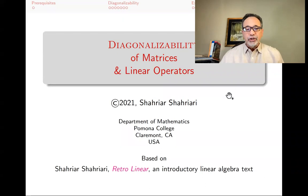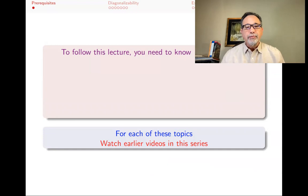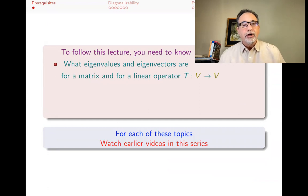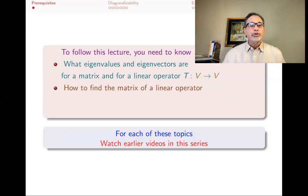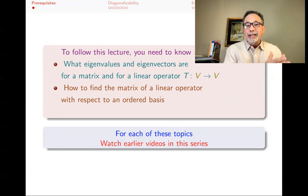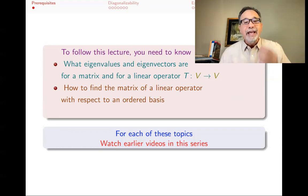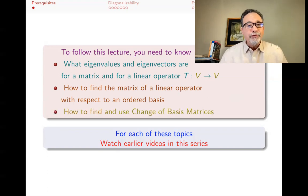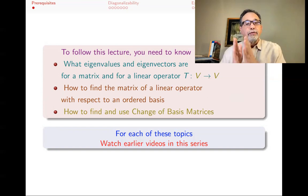To follow this lecture, you need to know certain things, all of which have been topics of previous videos. You need to know what eigenvalues and eigenvectors are — not just for matrices, but also for linear operators, which are linear transformations from a vector space to itself. You also need to know how to find the matrix of a linear operator with respect to an ordered basis, and you need to know about change of basis matrices, which allow you to change coordinates of vectors from one basis to another.